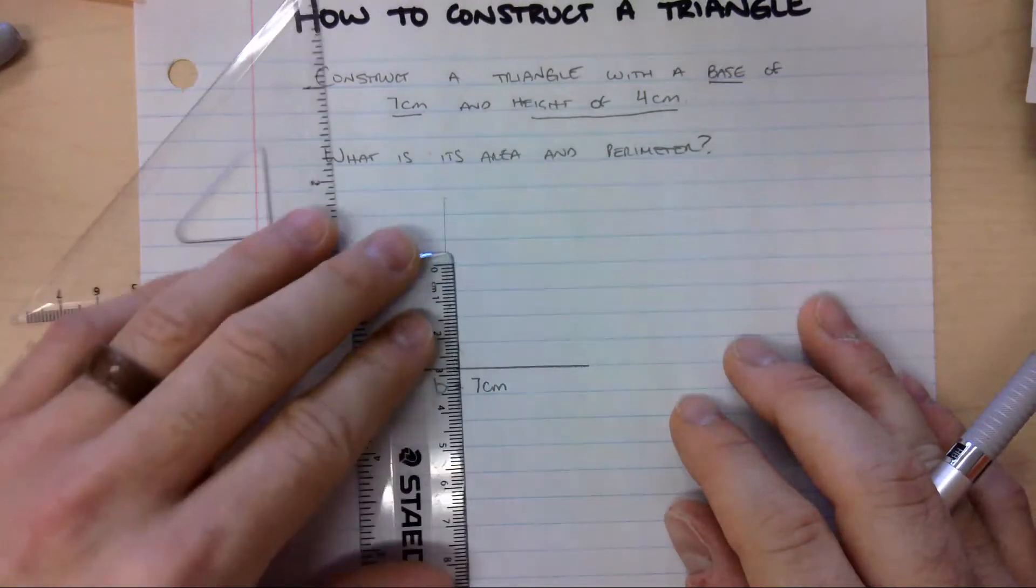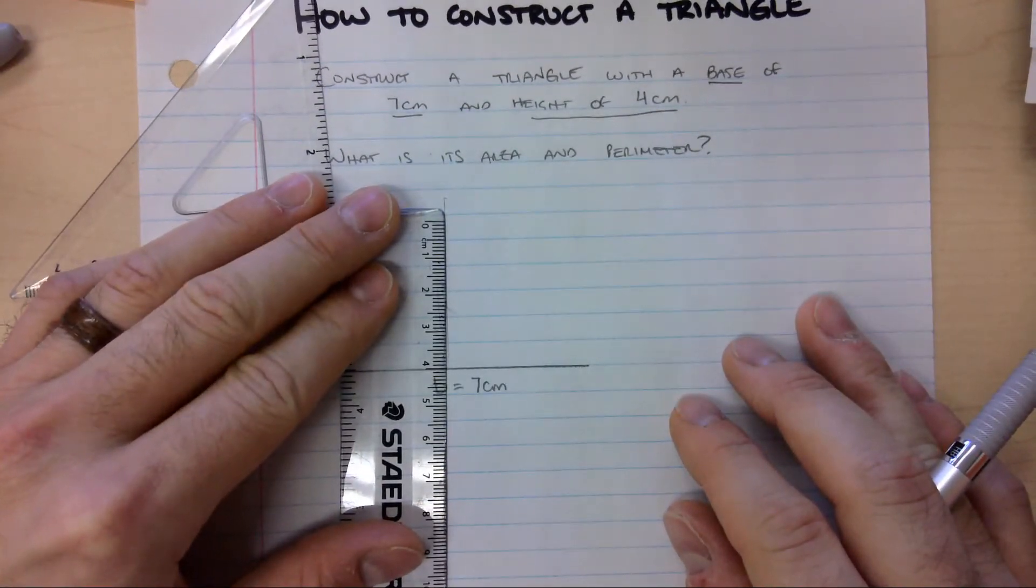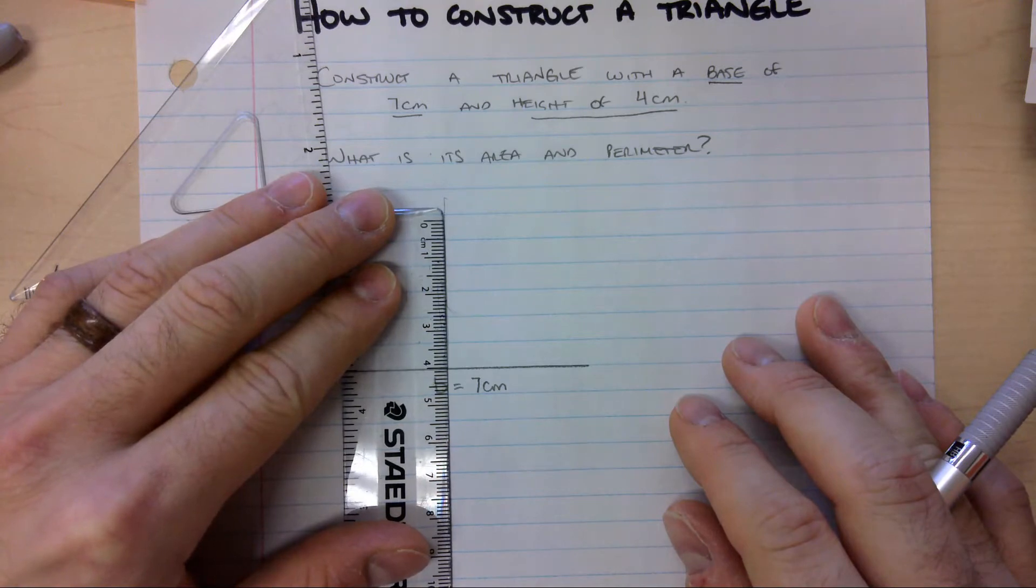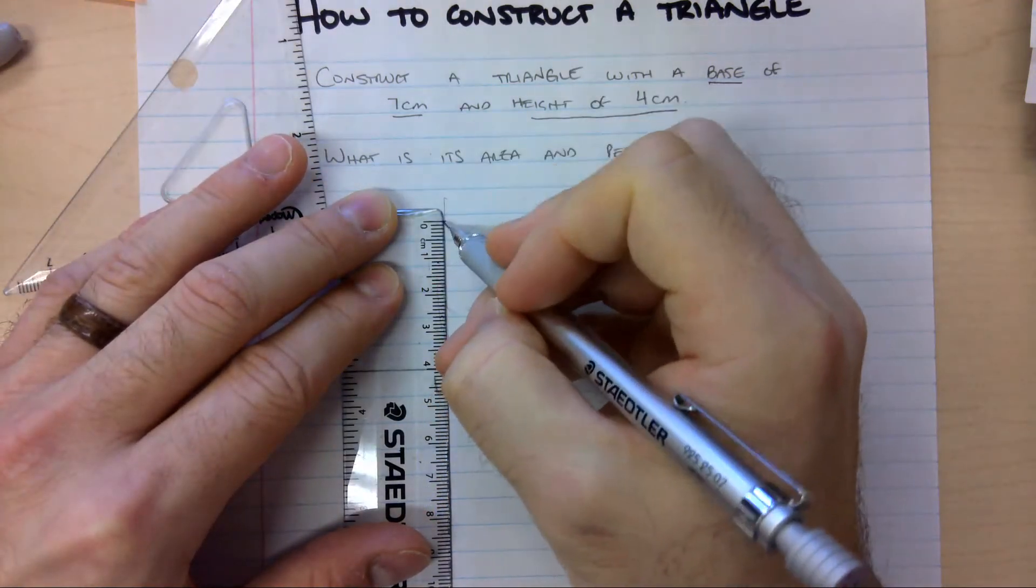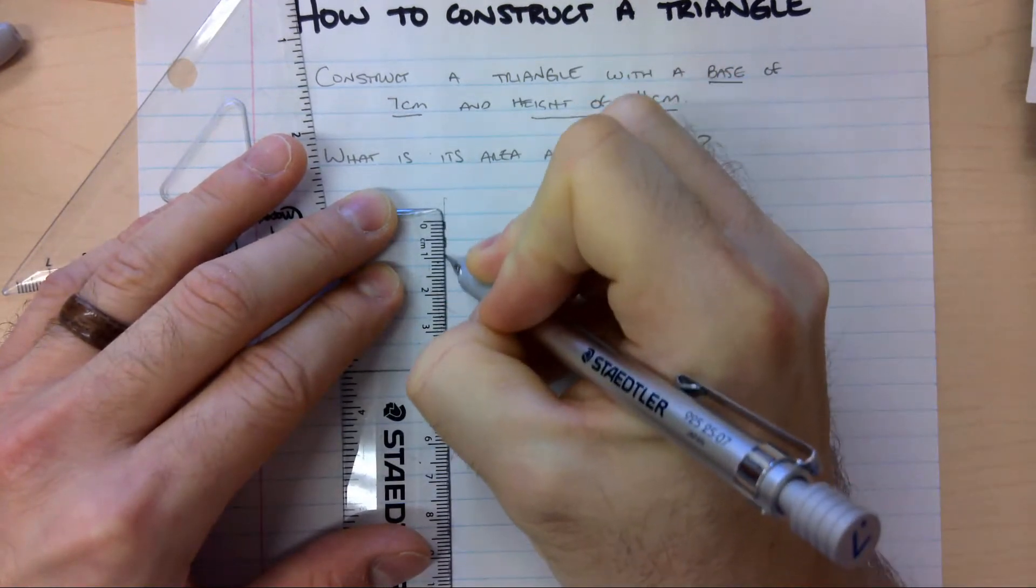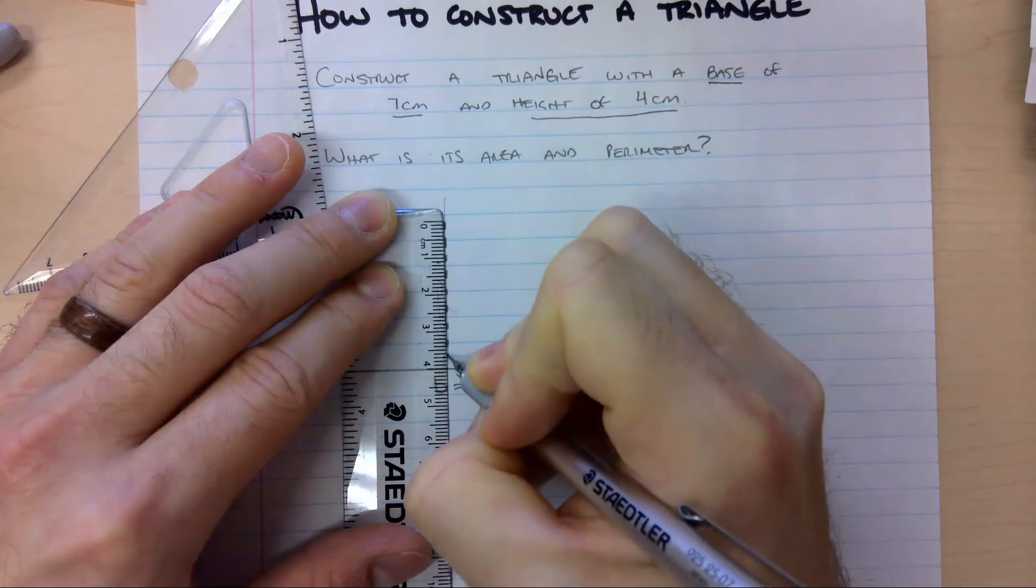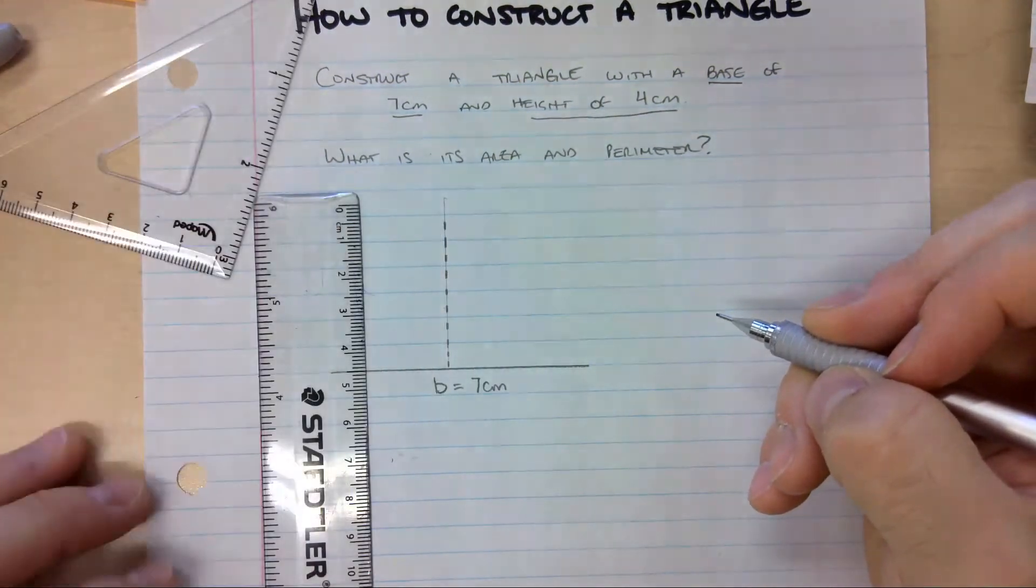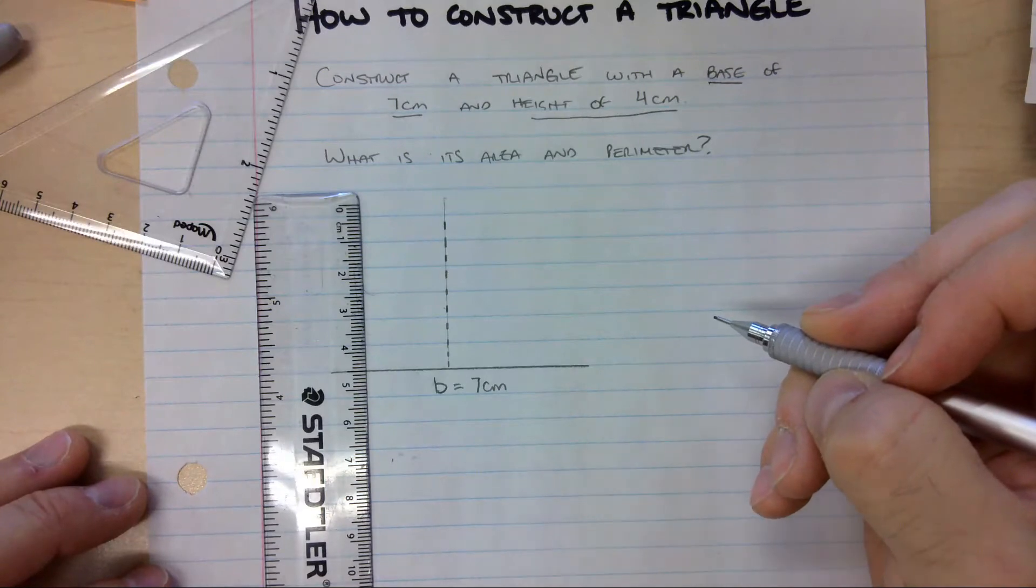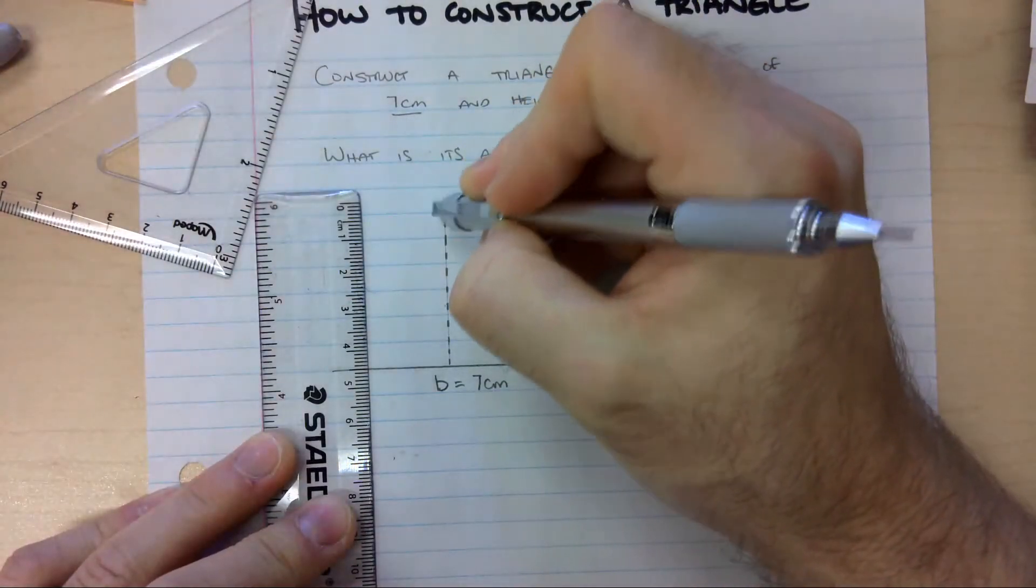Now I can come back and draw my 4 centimeter height. So I line up 4 centimeters directly on my baseline. And because it's my height, and in a triangle, in this triangle anyway, my height is on the inside of my shape, I'm not going to draw a solid line. I'm going to draw a dotted line and erase the part that I don't need.